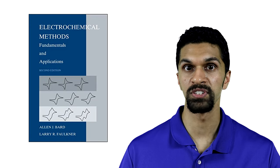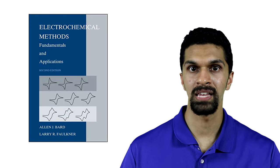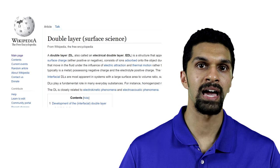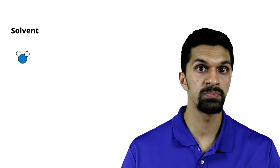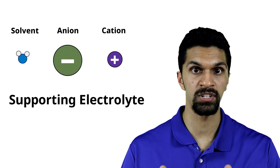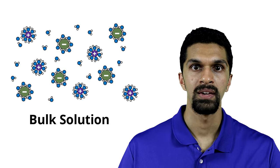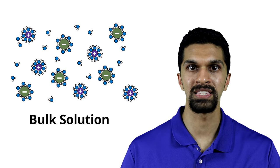The electrical double layer is a fairly complex topic in electrochemistry, and we paint a very simplistic picture of it here. We recommend taking a look at a standard electrochemistry textbook such as Electrochemical Methods: Fundamentals and Applications by Alan Bard and Larry Faulkner. The Wikipedia article on the electrical double layer is also quite helpful, with a link in the description below. The important thing about the electrical double layer is that the orientation of solvent molecules, anions, cations, and supporting electrolyte is different than in the bulk solution, and the behavior of the electrical double layer is that of a capacitor.